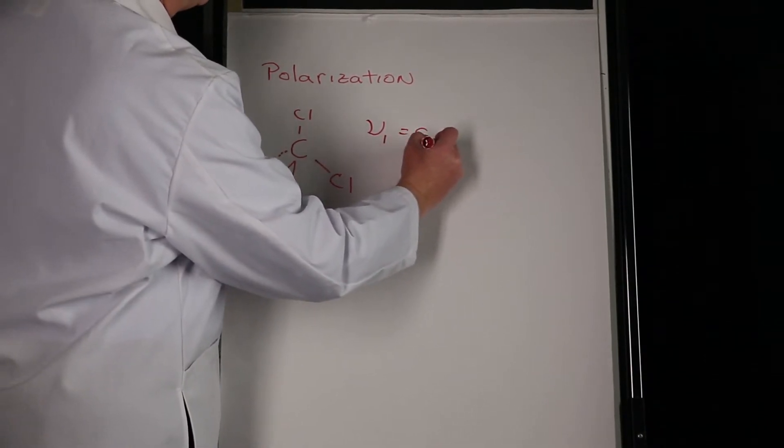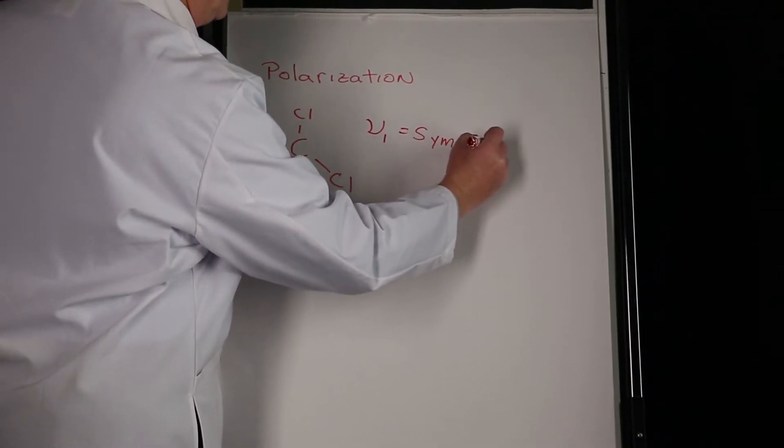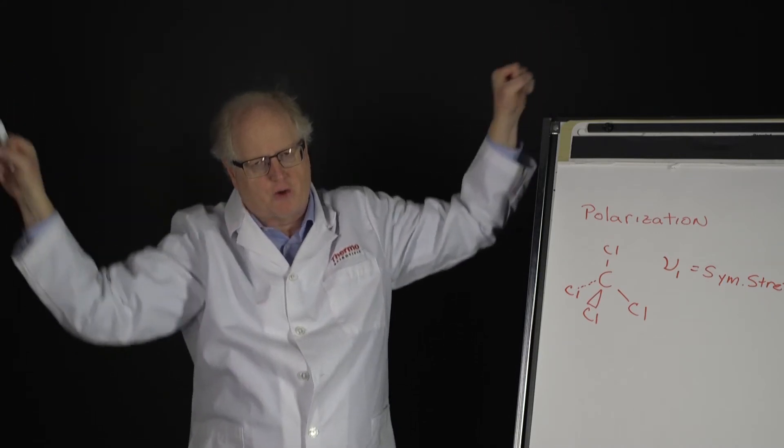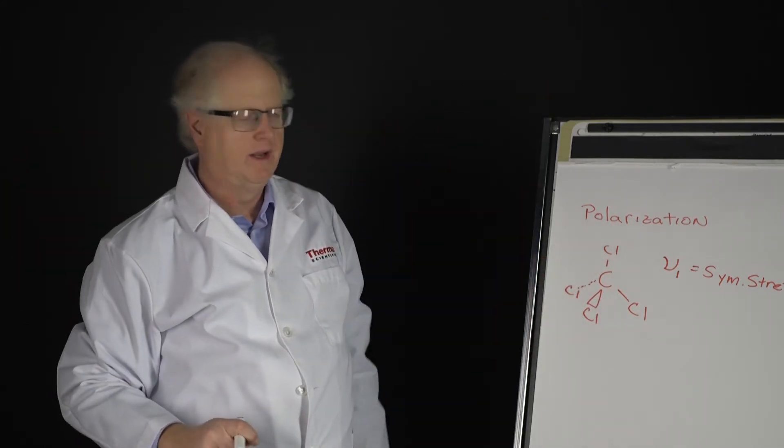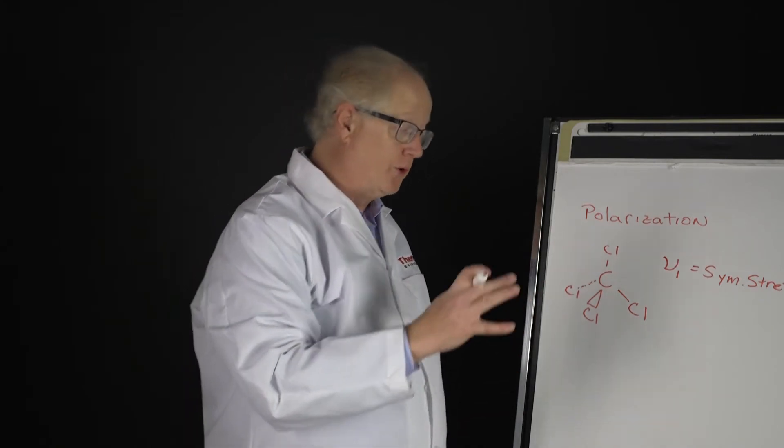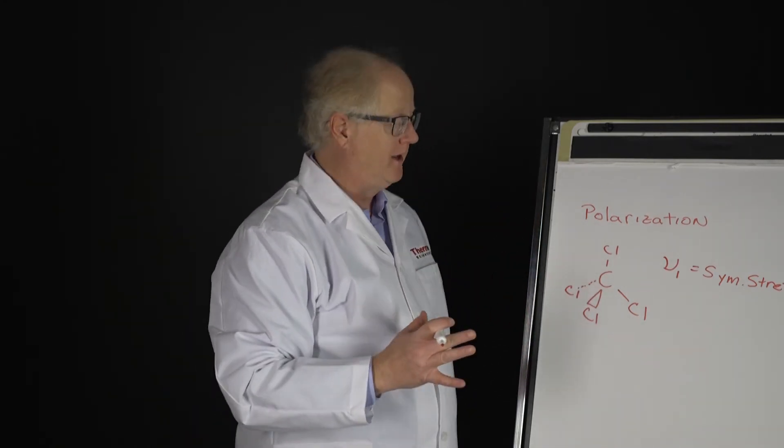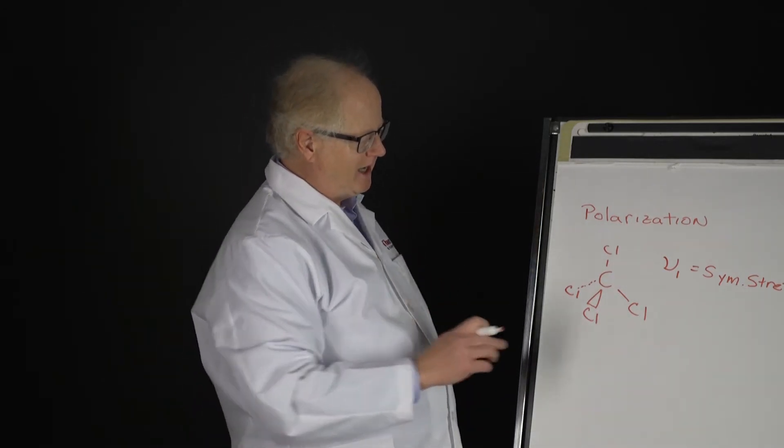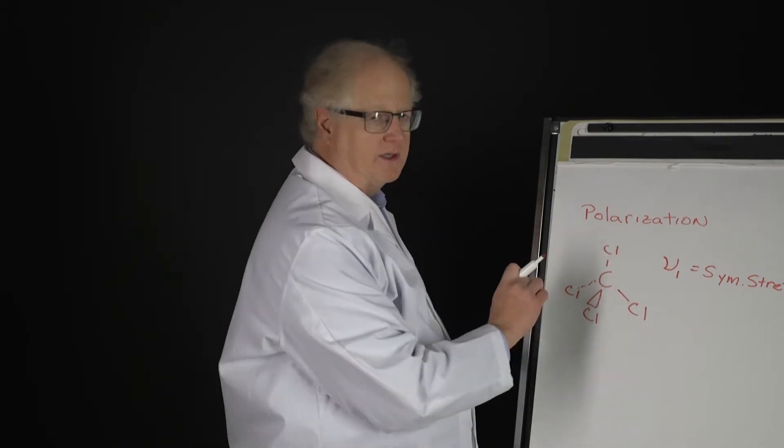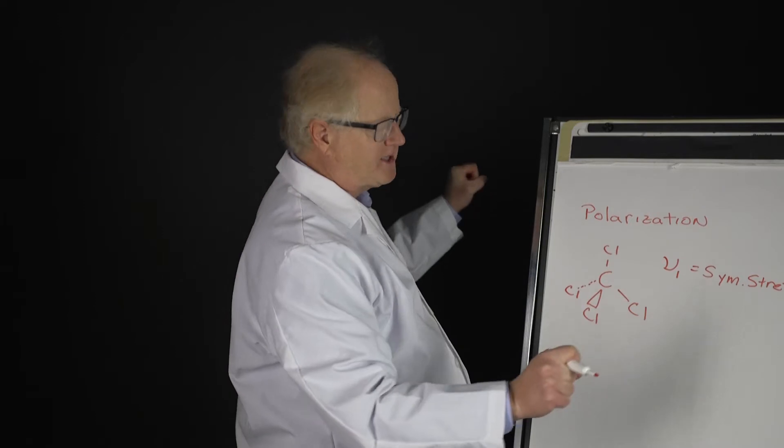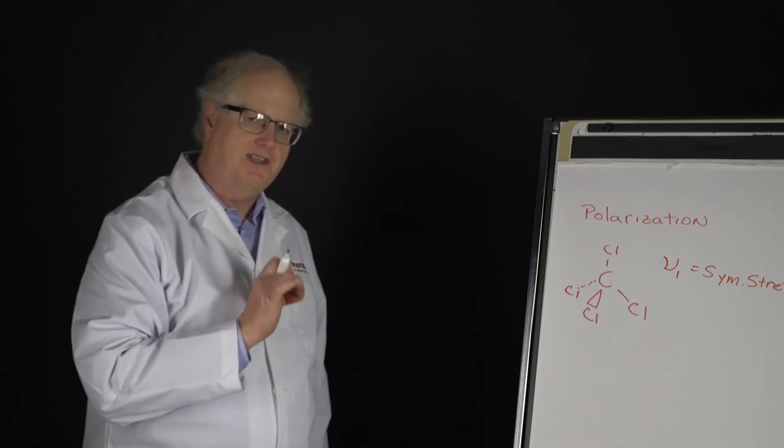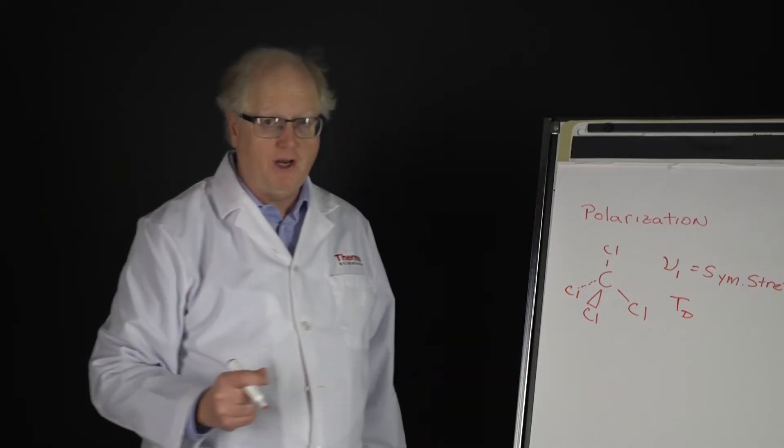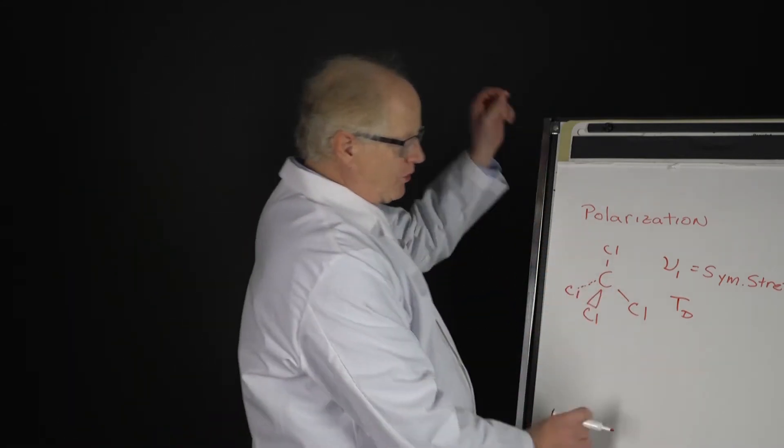The basic normal mode for ν1 is a symmetric stretch. What that means is all four of the chlorines are stretching simultaneously, going in and out. Now that doesn't change the dipole, so if you were to look in the infrared spectrum you would not see a peak there. But it does generate a sizable Raman peak. The other interesting thing is that when I stretch those four chlorines, whether they're stretching or compressing either way, it doesn't change the symmetry.